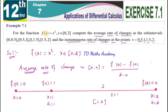To find the instantaneous rate of change, you need to find the differentiation of the given function. So f dash of x — find out the answer: 2x. That is the derivative. Then substitute the particular point's x value, and you directly get the answer for instantaneous rate of change.